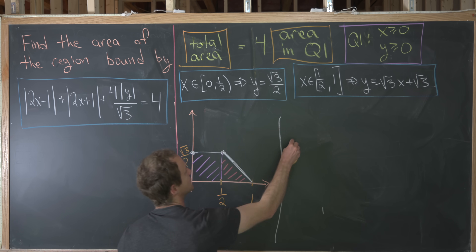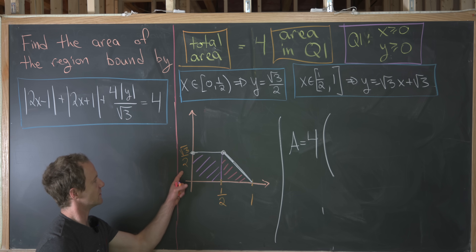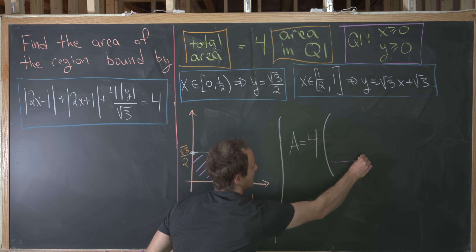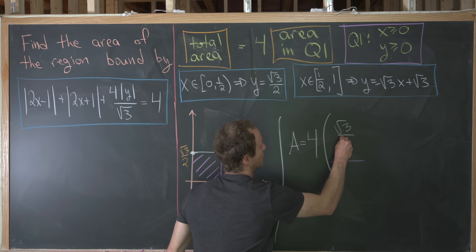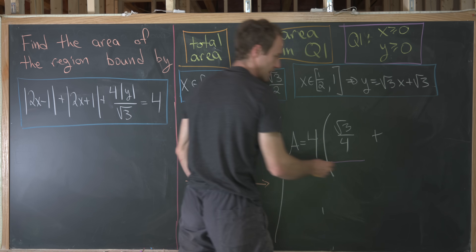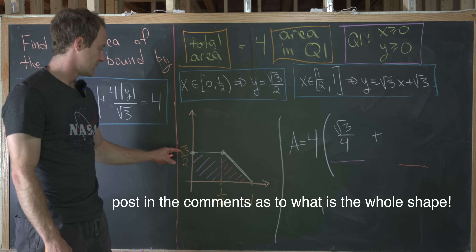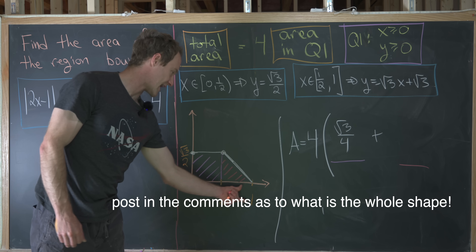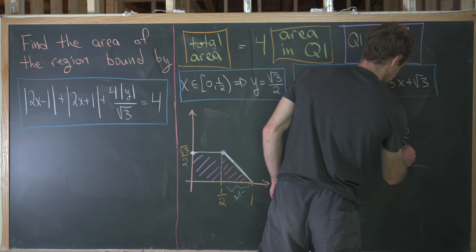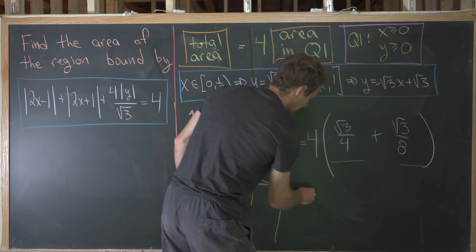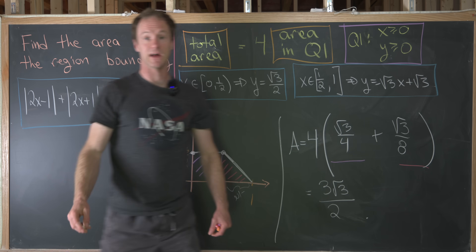Our total area A equals 4 times the first-quadrant area. The purple rectangle has dimensions 1/2 (width) by √3/2 (height), giving area √3/4. The red triangle has base 1/2 and height √3/2, giving area (1/2)(√3/2)(1/2) = √3/8. Adding these: √3/4 + √3/8 = 3√3/8. Multiplying by 4 gives the final answer: A = 3√3/2.